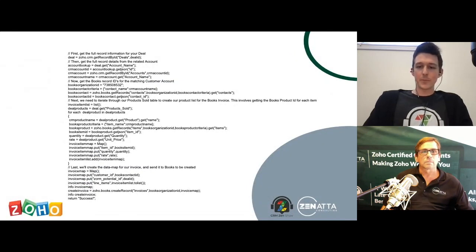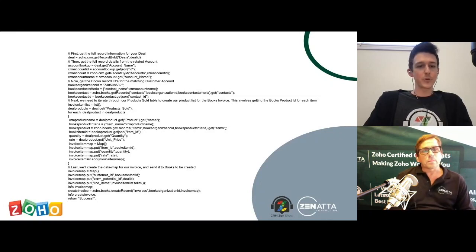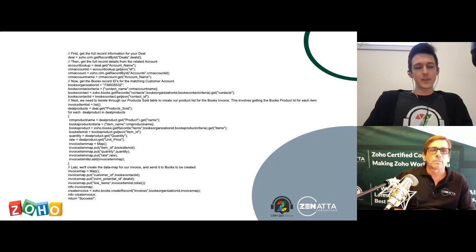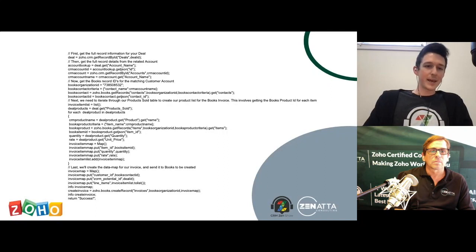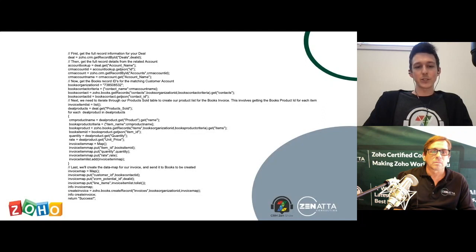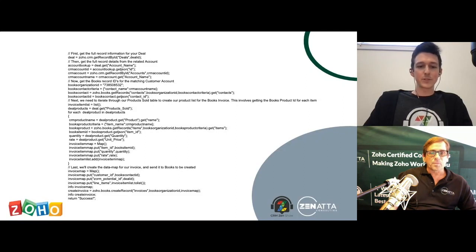This function will be basically the same for your system — just update the organization ID, which is a unique identifier for your Books company. Other than that, most of it should be standard except for your API name for products sold and the deal products subform name and field names. Save the button to open it up for use for the rest of the team. The function for creating invoices directly from the deal record is provided for copy and paste.